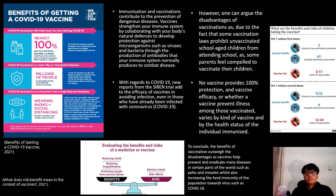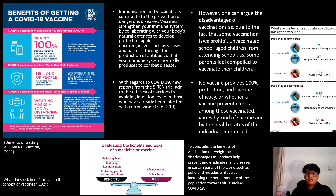Immunization and vaccination contribute to the prevention of dangerous diseases. Antibiotics cannot be used to treat viral disorders — they can only be controlled through vaccinations. Vaccines strengthen the immune system by collaborating with the body's natural defenses to develop protection against microorganisms such as viruses and bacteria through the production of antibodies. The immune system is programmed to retain information, and after receiving one or more doses of a vaccine, humans are typically protected against diseases for years. As a result, immunizations are highly effective.